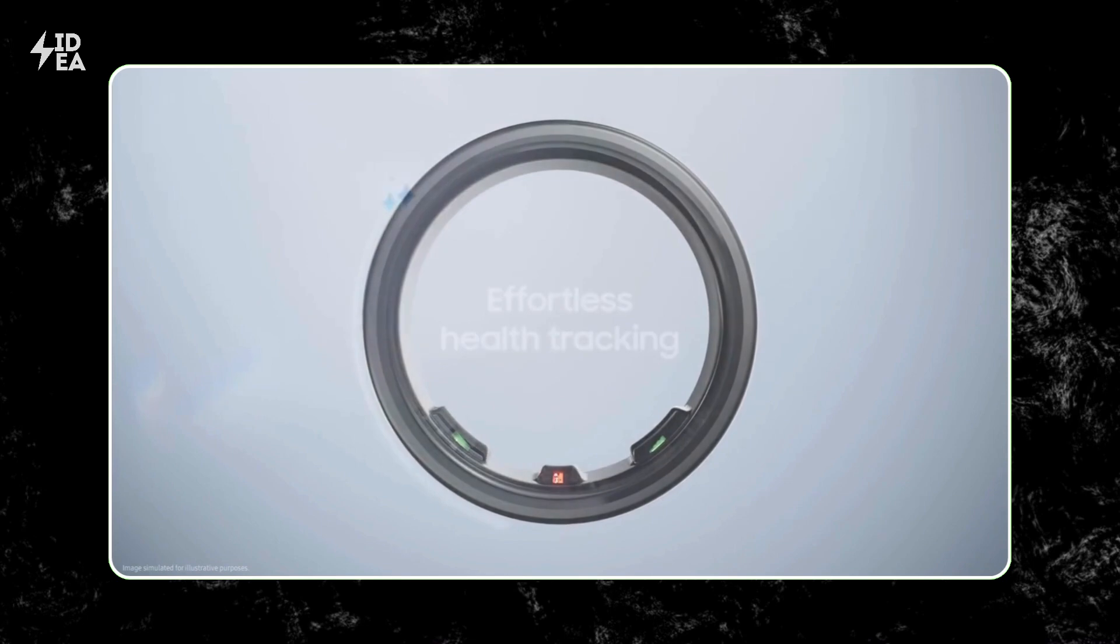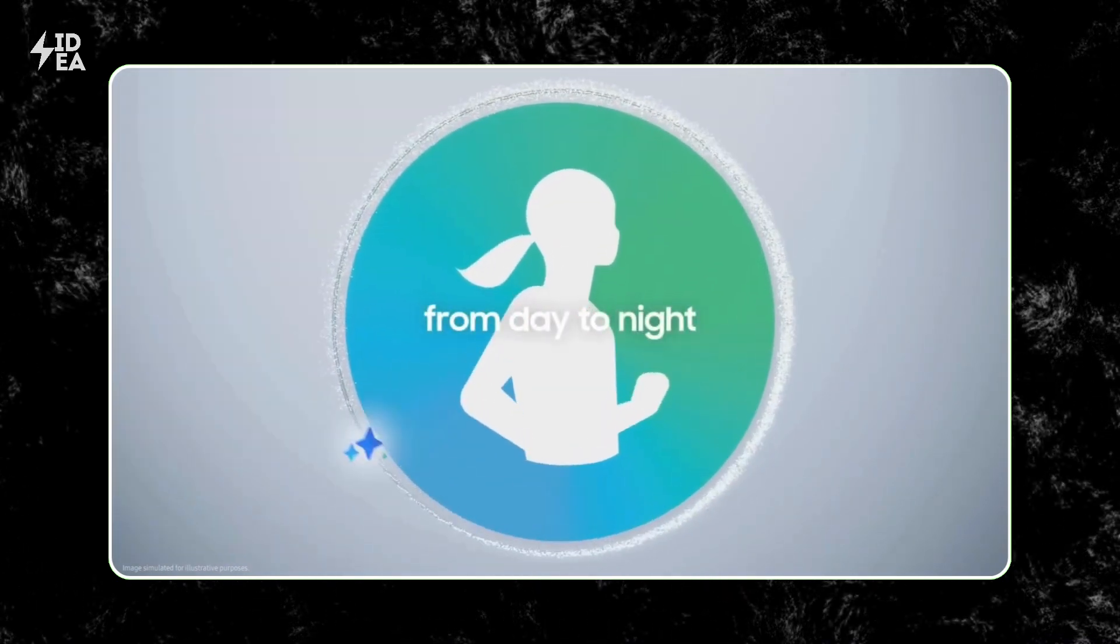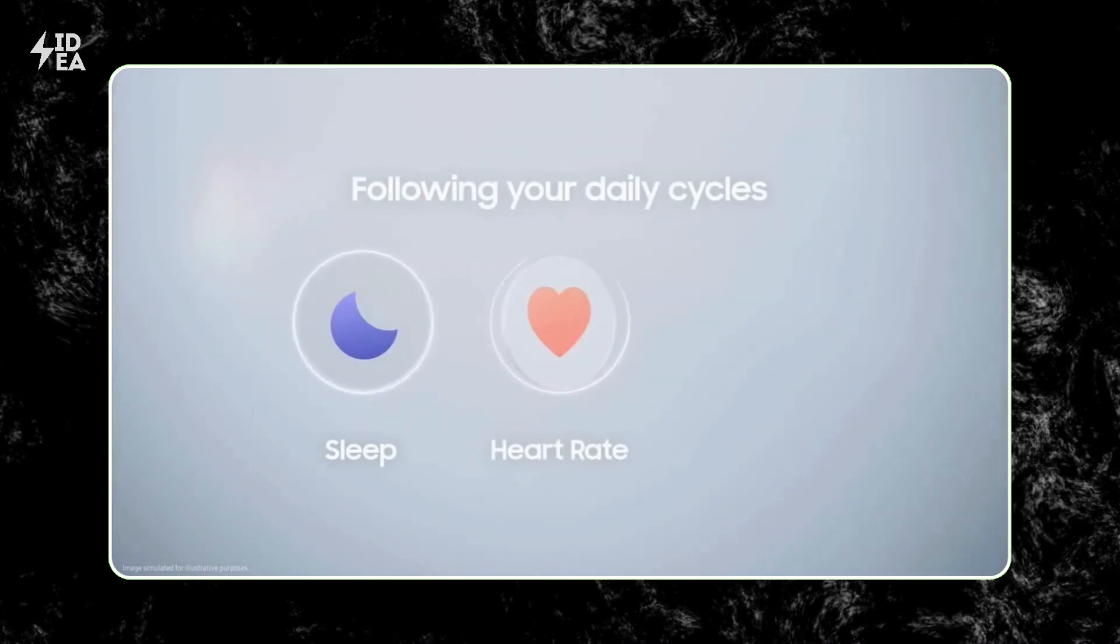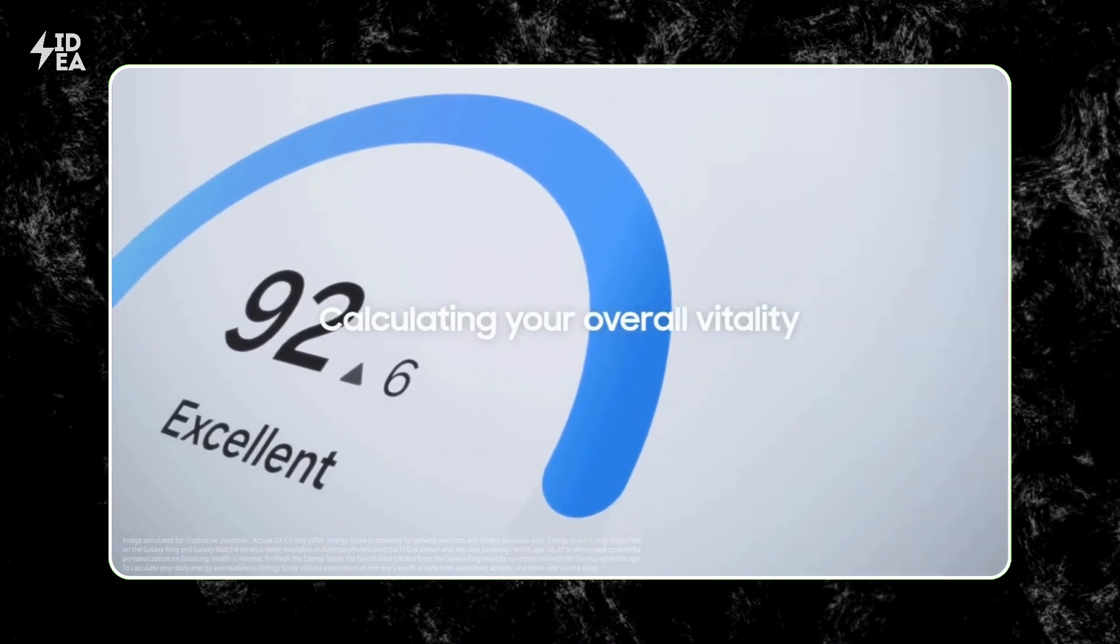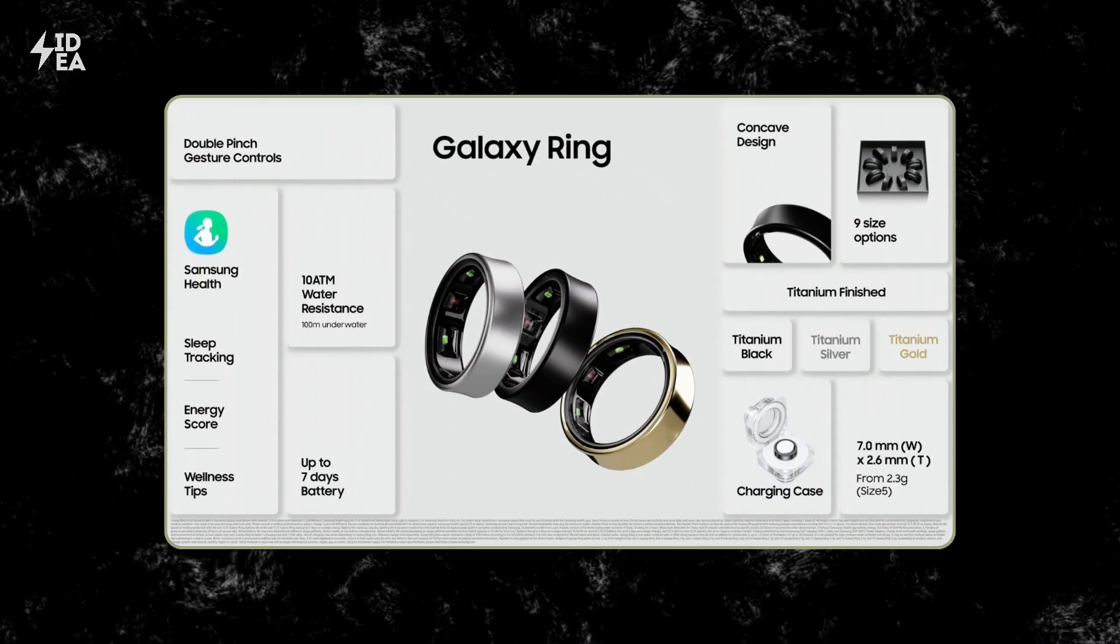The Samsung Galaxy Ring boasts incredible features that make it stand out in the world of smart rings. This ring is equipped with advanced sensors to monitor heart rate, blood oxygen levels, sleep patterns, and body temperature. These sophisticated sensors provide deep insights into your health, helping you better understand your body.